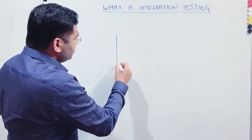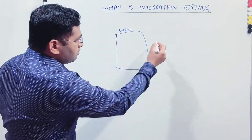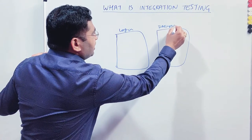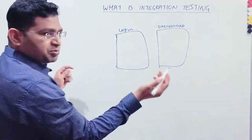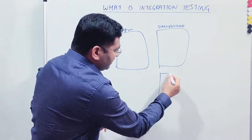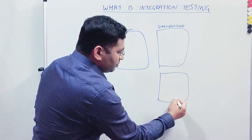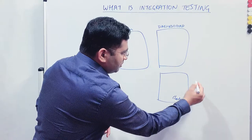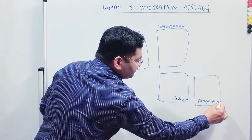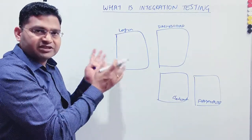Now correlating that with software — take an e-commerce website, which has separate modules: a login module, a dashboard where the user finds previous orders, profile information, and address, then buying items, going to checkout, and a payments page. These are some of the high-level functionalities that can be present.